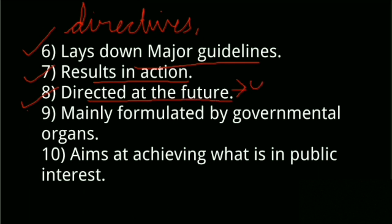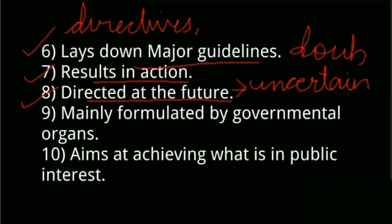Policies are directed at the future, which is one of the most important characteristics since it introduces the ever-present elements of uncertainty and doubtful prediction that establish the basic tone of nearly all policy making. Policy making tends to formulate policies in vague and elastic terms because the future is so uncertain, so it permits policy makers to adjust their policies according to emerging facts and enables them to guard against unforeseen circumstances.